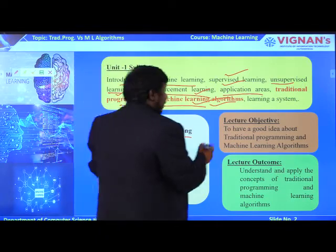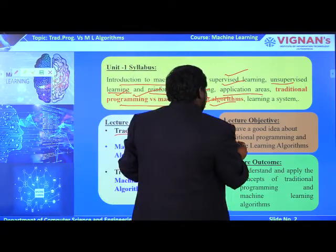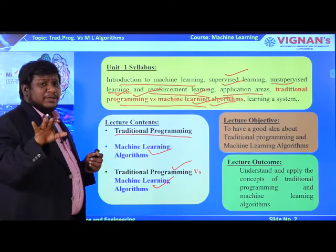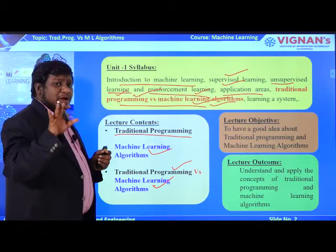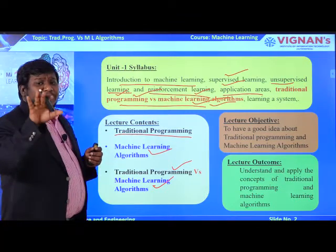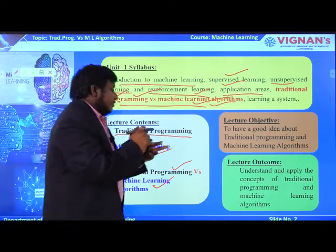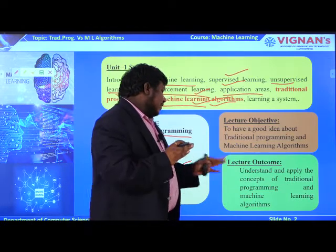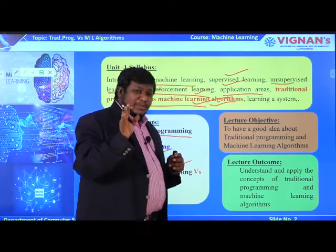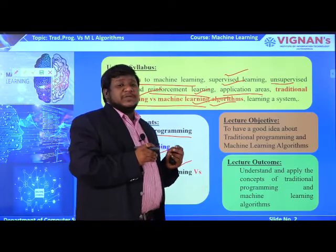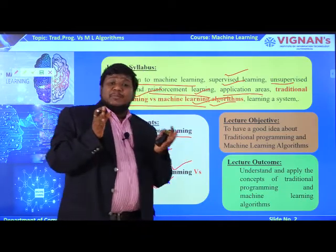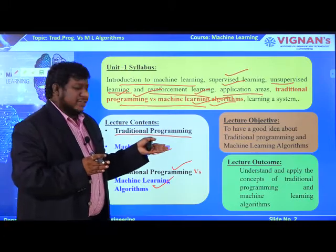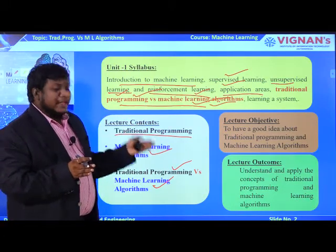The objective of this lecture is that the student can have a good understanding of what is traditional programming, what are machine learning algorithms, and how those two are differentiated from each other. The lecture outcome is that the student can have a better understanding of traditional programming methods, machine learning algorithms, and the main differences observed between them.